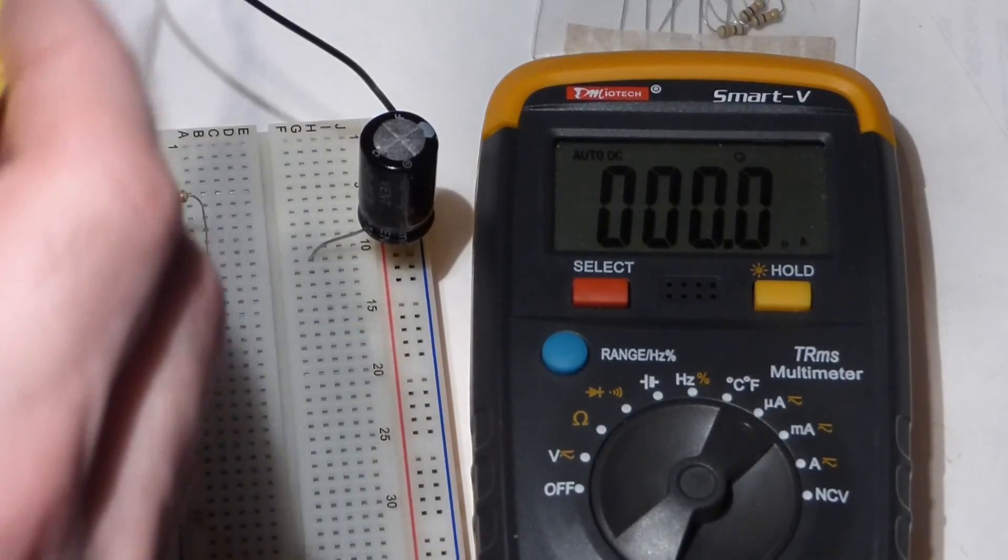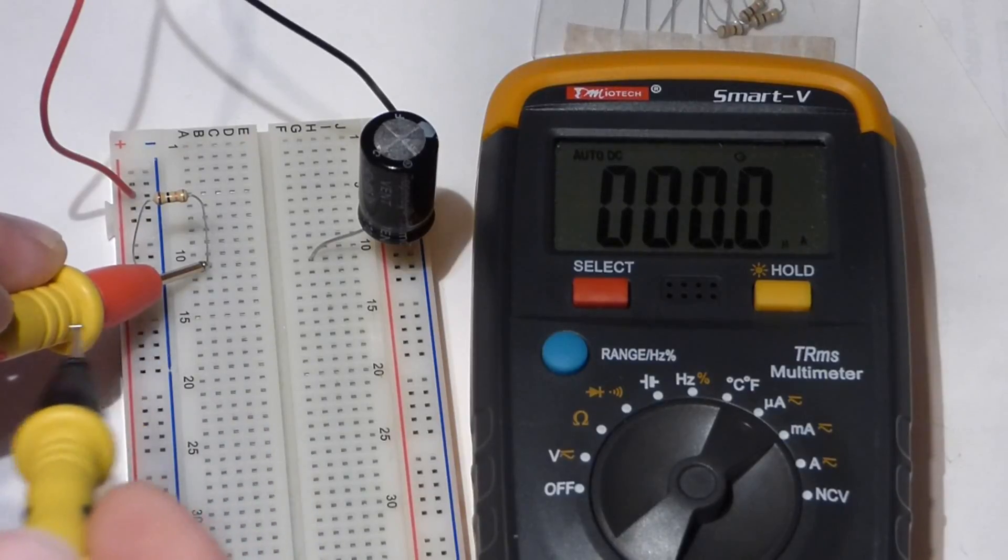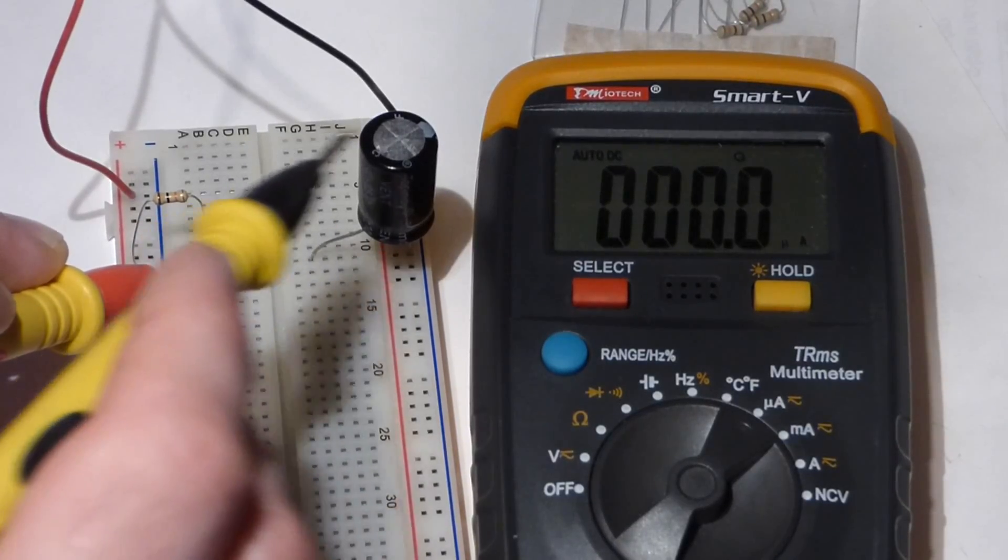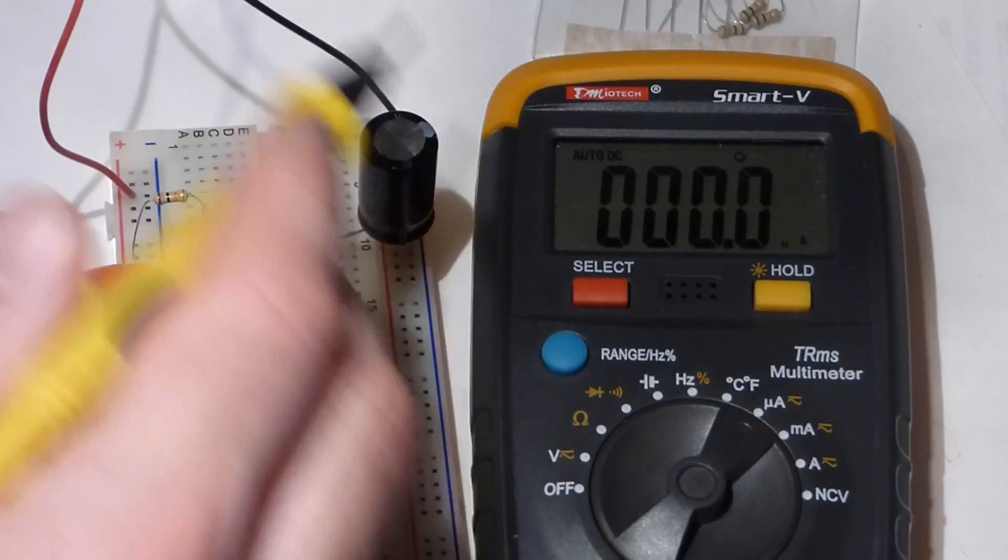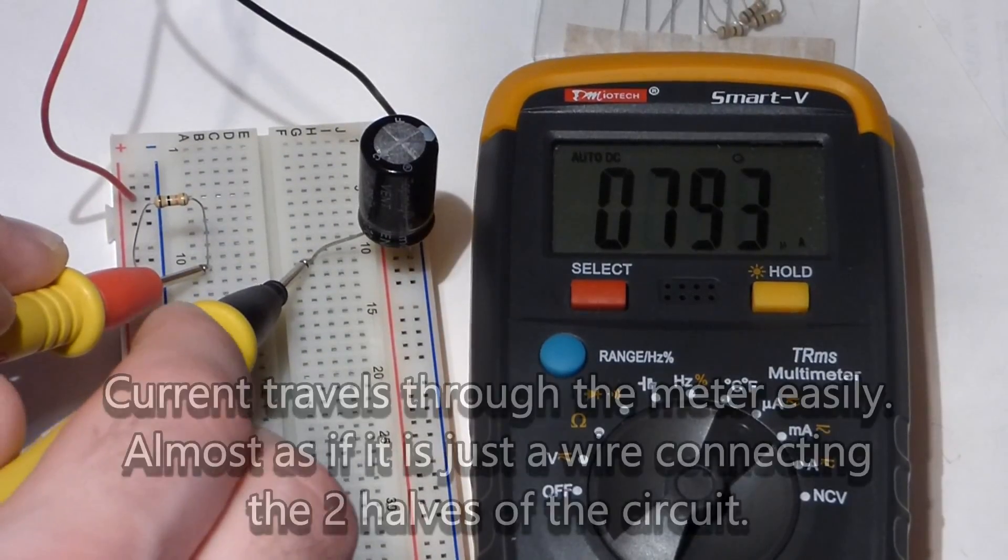So now, since this is the more positive side of the circuit, we're going to put the red probe there. Since this is the more negative side of the circuit, we're going to put this probe there.